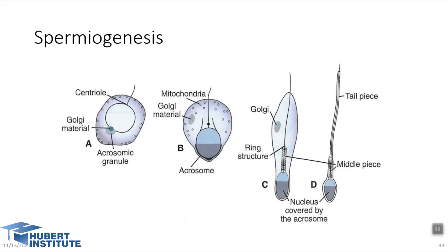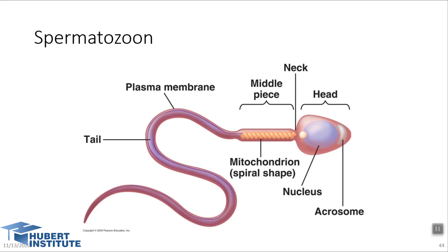In humans, the time required for a spermatogonium to develop into a mature spermatozoon is approximately 74 days, and approximately 300 million sperm cells are produced daily. When fully formed, the spermatozoa enter the lumen of the seminiferous tubules and are pushed toward the epididymis by contractile elements in the tubule wall. In the epididymis, the spermatozoa obtain full motility — at this point we call them mature sperm.